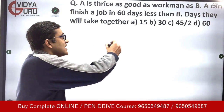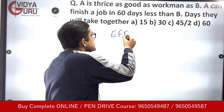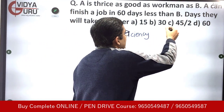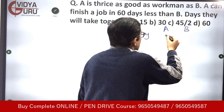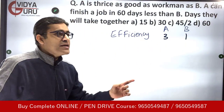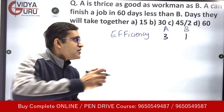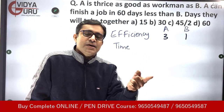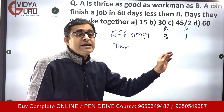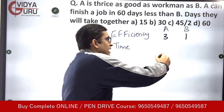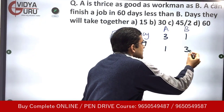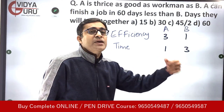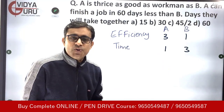It has been given that A's efficiency is more. The ratio of efficiency for A and B is 3:1 — A is three times more efficient than B. So the time taken will be in inverse proportion. That means A will take less time and B will take more time. The ratio of time taken will be 1:3 — B will take three times more time than A.